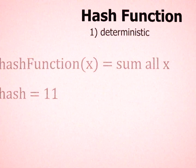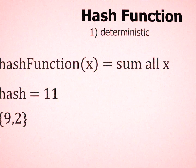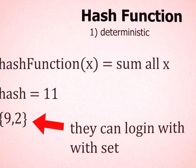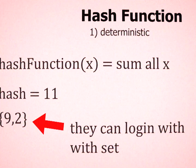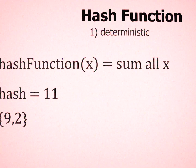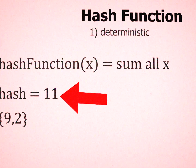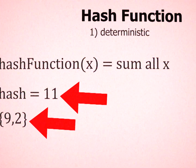But we have a problem. One can easily find a set, also known as a password, that will produce the hash. So they can log into your account without knowing your exact password. This is something known as the pre-image attack — given a hash, one tries to find an input that produces the hash.